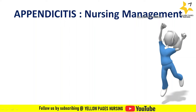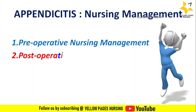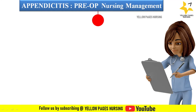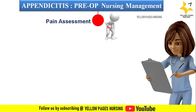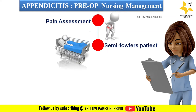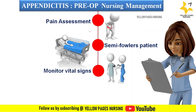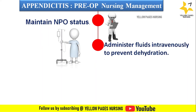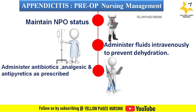In pre-operative nursing management, first assess the location, characteristics, and severity of pain. Provide semi-Fowler's position to reduce pain and collect exudates into the lower abdomen, relieving abdominal tension. Monitor vital signs hourly and monitor bowel sounds. Maintain the patient on nil per oral (NPO) status.